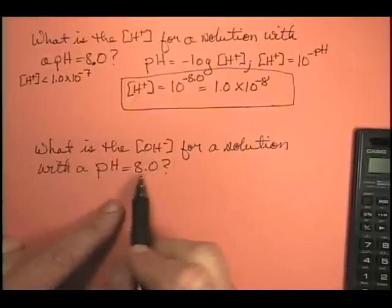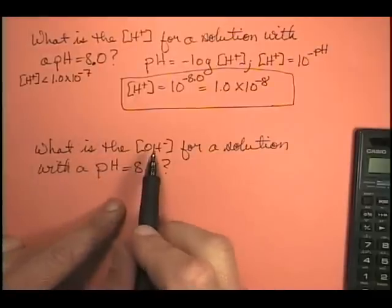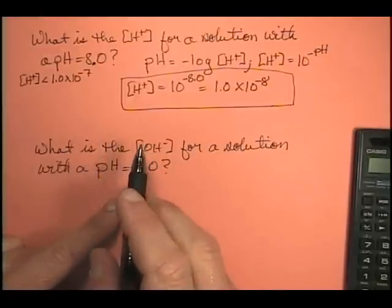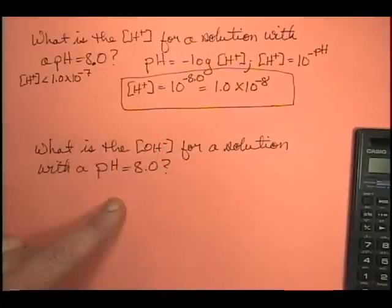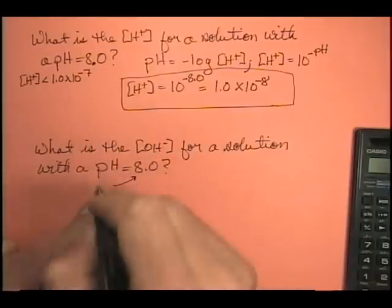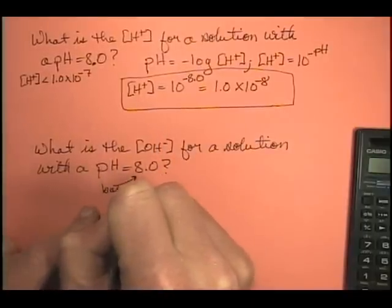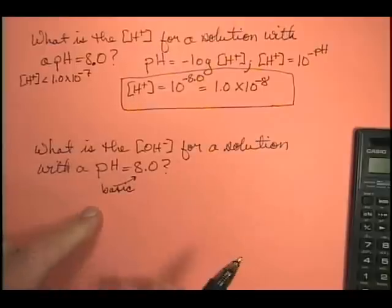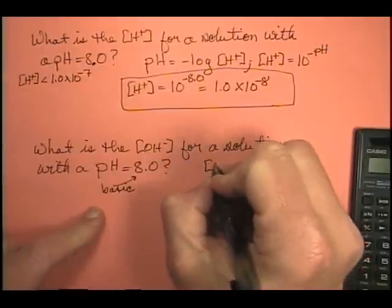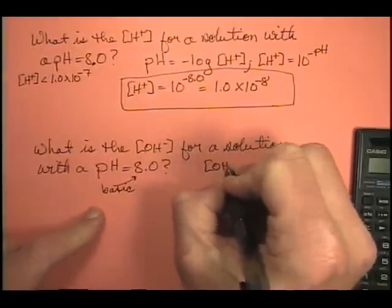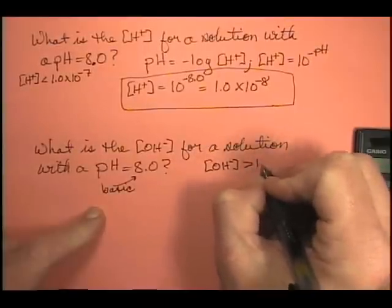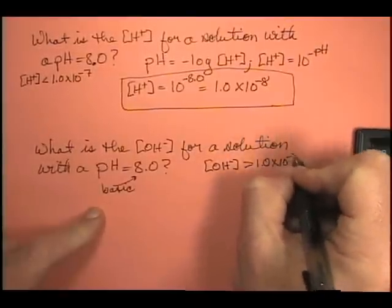Now we're looking at the same solution with a pH of 8 and we want to find out what the hydroxide ion concentration is. Remember, this is a basic solution — pH of 8 is above 7, so it's basic. What do we know about basic solutions? We know that their hydroxide ion concentrations are greater than 1.0 times 10 to the minus 7.